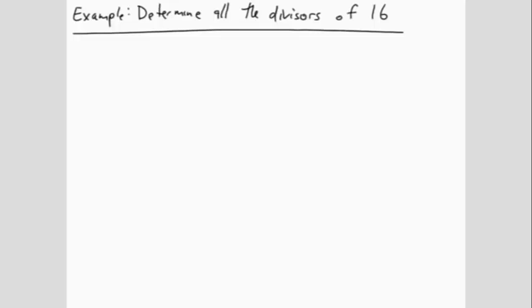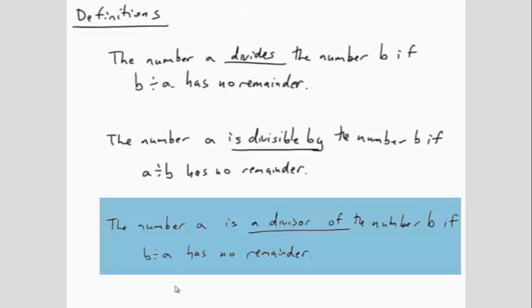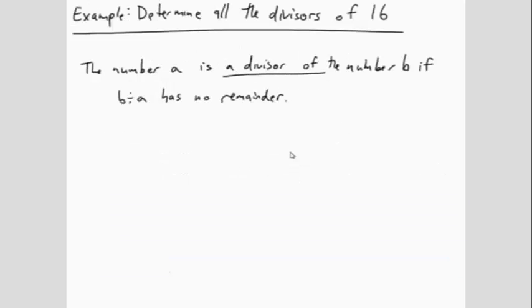Let's look back at the definitions. The number A is a divisor of the number B if B divided by A has no remainder. We are trying to find divisors of 16. So 16 is the number B. This means we need to see what numbers A satisfy the property that B divided by A has no remainder. A systematic way to check this is to take 16 and divide it by numbers starting from 1 and increasing at each step.